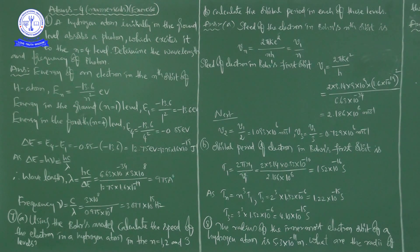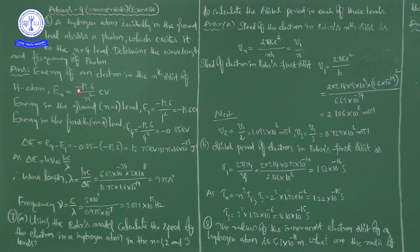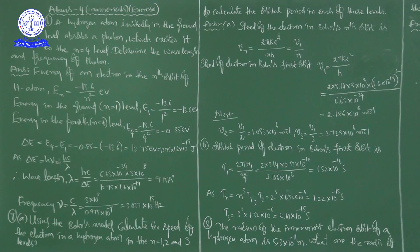First, what is the formula to calculate the energy of an electron in the nth orbit? Energy of an electron in the nth orbit of a hydrogen atom: E_n is equal to minus 13.6 by n squared, in electron volts.